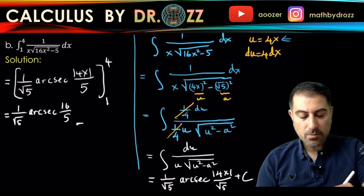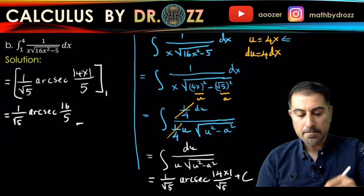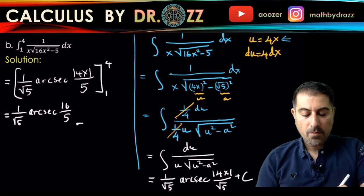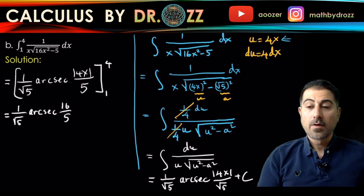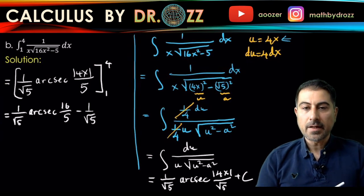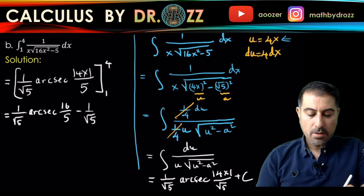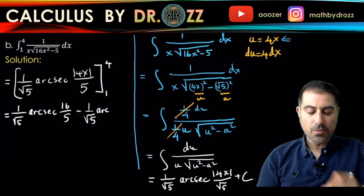Or maybe just rewrite this so I can save space. Minus 1 over √5, and then if you plug in one, arc secant 4/5.